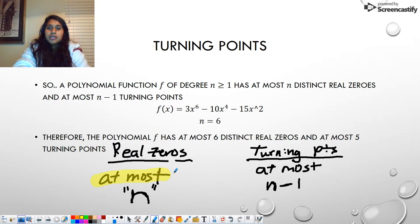So yes, it's n and yes, it's n minus 1. But it's at most those values. So that's not a guarantee. So right over here, we have n equals 6, right?